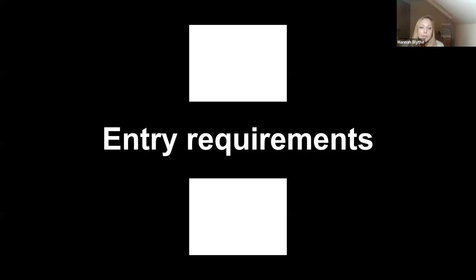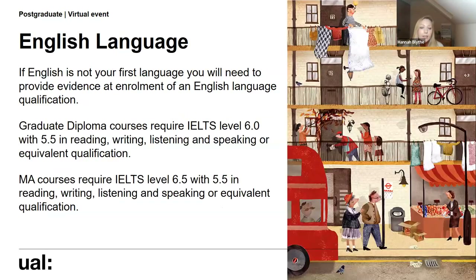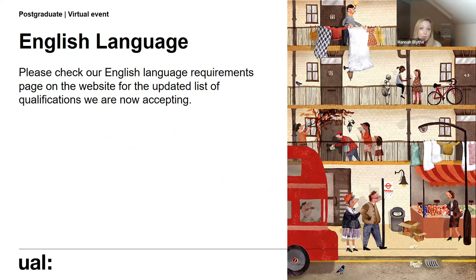If you're looking to join one of our MA courses, we would be looking for a BA degree or equivalent academic qualification, and you'll need to demonstrate your ability in your chosen subject area through your personal statement and portfolio of work. If English is not your first language, you'll need to provide evidence of an English language qualification at enrolment — you can apply before completing it. For MA Fine Art Computational Arts, we'd be looking for an IELTS of 6.5 with 5.5 in each skill.